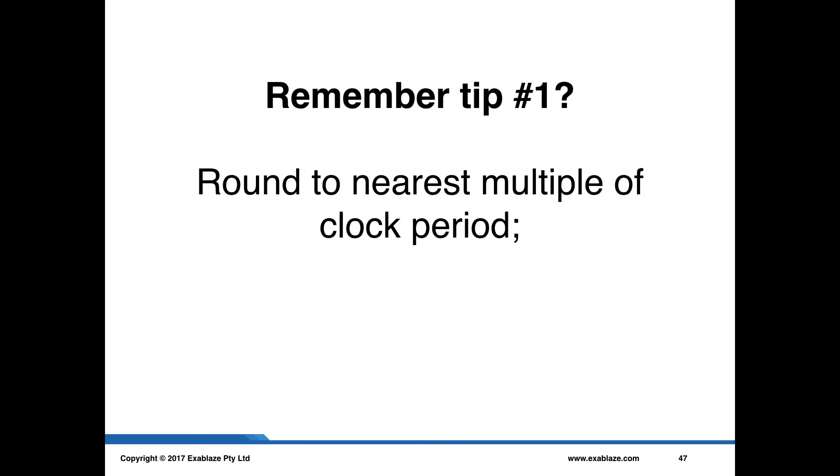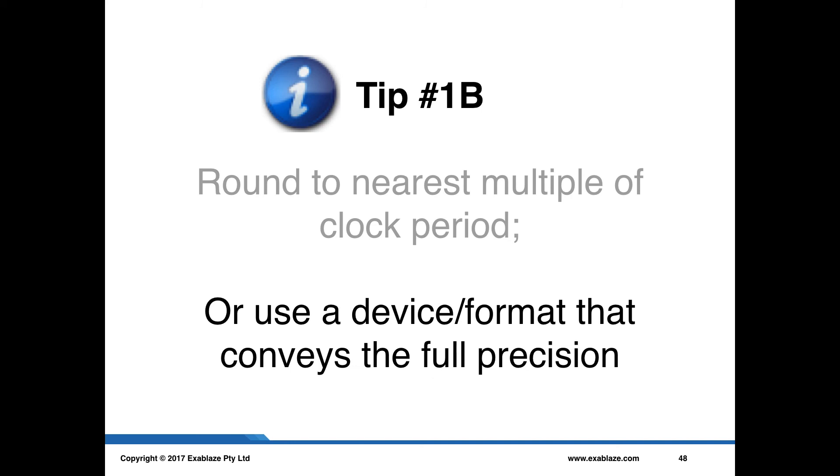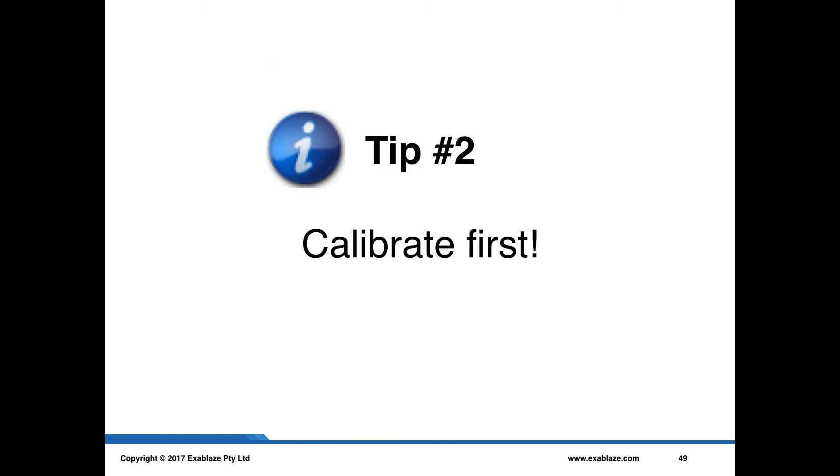So, if you remember tip number one, which was to round to the nearest multiple of the clock period. In this particular case, it's actually not quite so straightforward. What you need to do is round to the nearest multiple or use a device or format that conveys the full precision, which is exactly what the ExaNIC does. And the second obvious tip from all of this is that you need to really calibrate first. Make sure that you have an idea of what your devices are doing first before you attempt to do any kind of measurement with them.